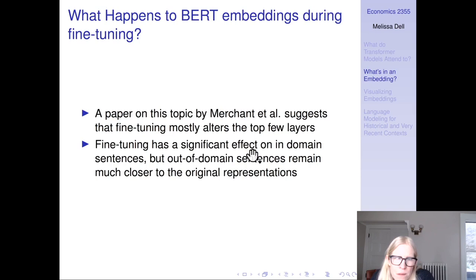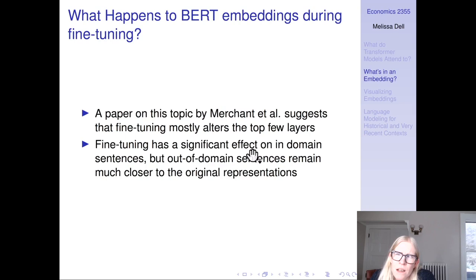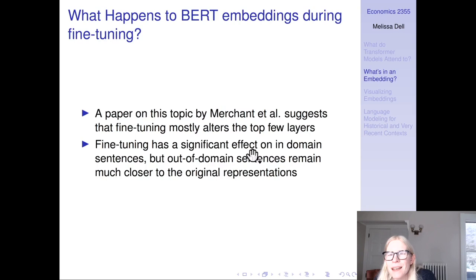What happens to BERT embeddings during fine-tuning? Fine-tuning mostly alters the top few layers, and it has a significant effect on in-domain sentences — sentences in the same domain as what it was fine-tuned on — but out-of-domain sentences remain much closer to the original representations. This serves as a sanity check: if you fine-tune on 20th century articles about sports, that fine-tuning hopefully doesn't have much impact on embeddings of Shakespeare. There is a phenomenon called catastrophic forgetting, where fine-tuning on a very narrow domain could cause the model to forget general-purpose knowledge.